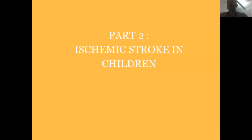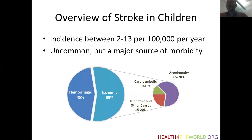In the second part of this talk, I'll review causes of ischemic stroke in children. Overall, the incidence of stroke in children is relatively low. It occurs in between 2 and 13 per 100,000 children per year. Nevertheless, it is one of the top 10 causes of morbidity and mortality in children and often leads to disability, which is why it's an important disorder to recognize.